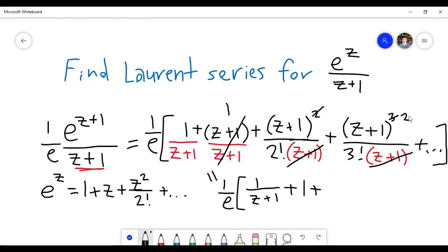This is z plus 1 to the 2nd divided by 3 factorial. The next term in this, if I cancel everything out, is going to be z plus 1 to the 3rd divided by 4 factorial, and then so on.